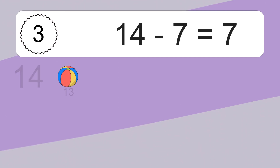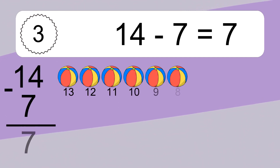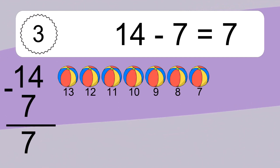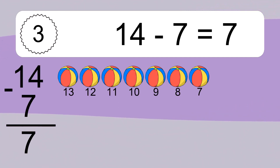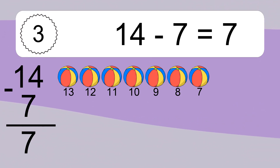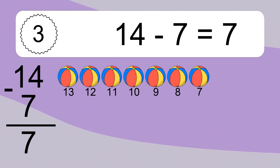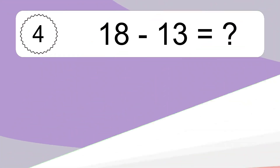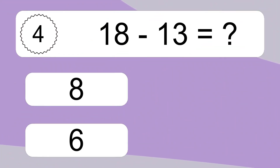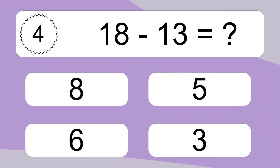14 minus 7 equals what? 14 minus 7 equals 7. Let's count it: 13, 12, 11, 10, 9, 8, 7.